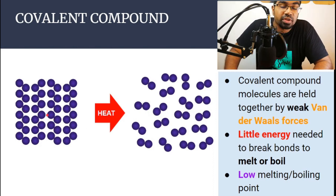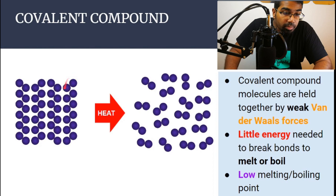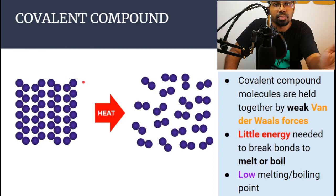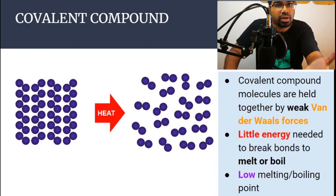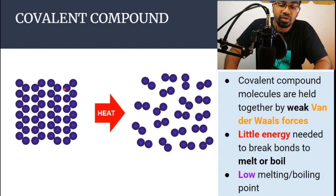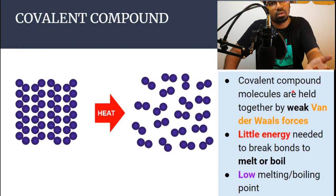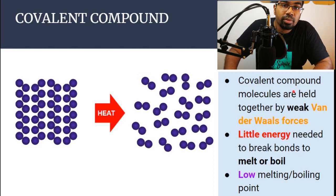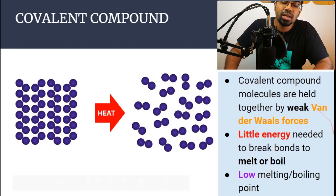For covalent compounds, the bonds between the molecules are the weak van der Waals forces of attraction. We are not trying to break apart the molecule into separate atoms — when we are melting or boiling a covalent compound we are breaking the bonds between the molecules. Since these bonds are very weak, we don't need to put in much energy, and therefore the melting and boiling point will be low.